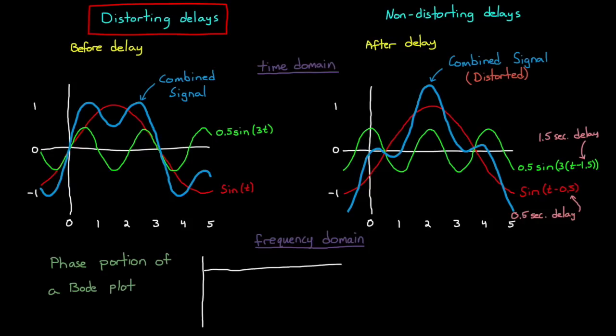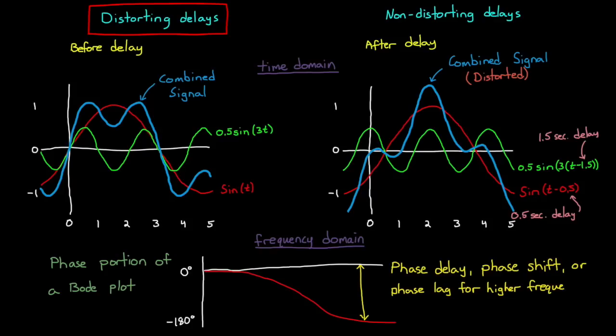How much each frequency is delayed through a process is what we're looking at in the phase portion of a Bode plot. In this instance, we don't usually talk about time delay. We talk about phase delay, or phase lag, for every frequency that makes up a signal. And what I've shown here is a process that has a higher phase delay for higher frequencies. We'll talk a bit more about phase delays shortly, but for now I want to compare this to non-distorting delays.